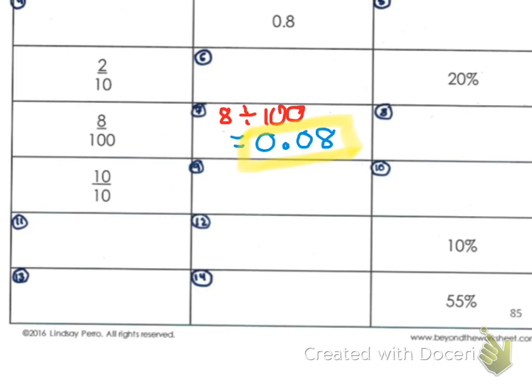So once again, that's just using your graphic organizer to help you see what to do. Now we have a couple of different options here. Once again, we could go from a fraction to a percent, or we could also move this decimal that we calculated to a percent.